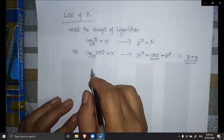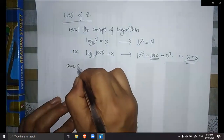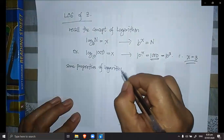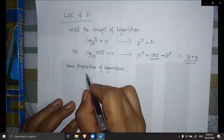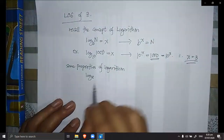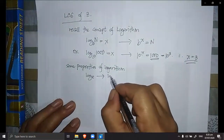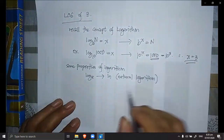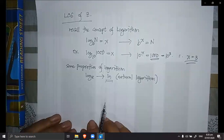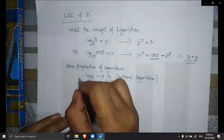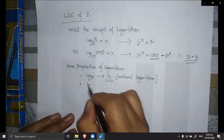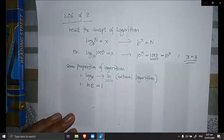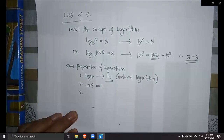Here are some important properties of logarithm that we will be using. The logarithm to the base of e is also known as ln, or what we call the natural logarithm. Take note: ln is the log to the base of e, and ln of e is equal to 1.